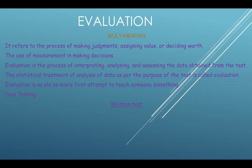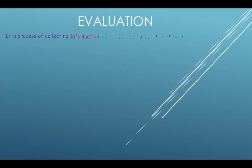Dated back to 2200 BC, the Chinese were believed to use written tests in the national system of education to select public servants. The first time written tests were used in education by a university was at Cambridge University, England, in 1702. Evaluation is the process of collecting information on the basis of which judgments are formed, and those judgments are in turn used for making decisions. This evaluation has three phases.